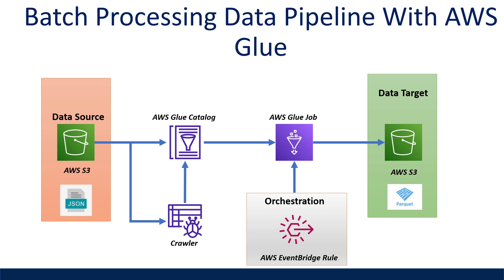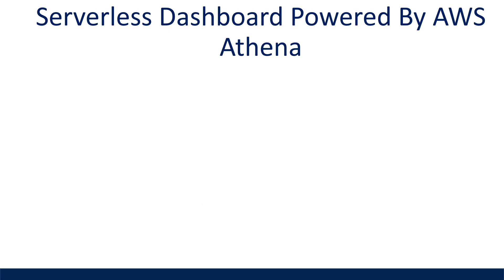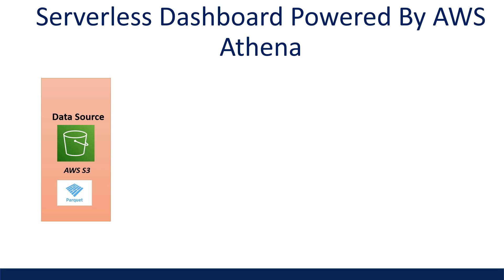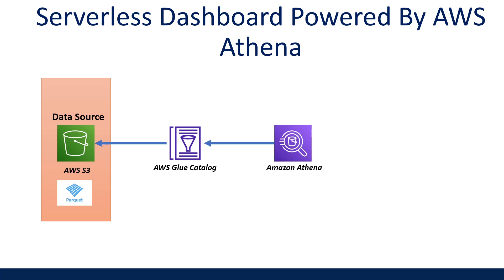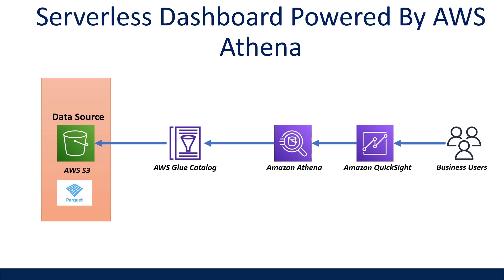Another common type of work for a data engineer is building the infrastructure and dashboard to provide data analytics to business users. The next example is how we can build a low-cost serverless dashboard on AWS. Let's say our data source is Parquet files stored on AWS S3 — we can assume the data has already been transformed and cleaned by an upstream data platform. First, we make sure our data is defined in the AWS Glue catalog. Once defined, we can use Amazon Athena as the serverless compute engine, where we only pay per query. We can then build an Amazon QuickSight dashboard which uses Athena to perform queries, and end users can log in to interpret the data visually.